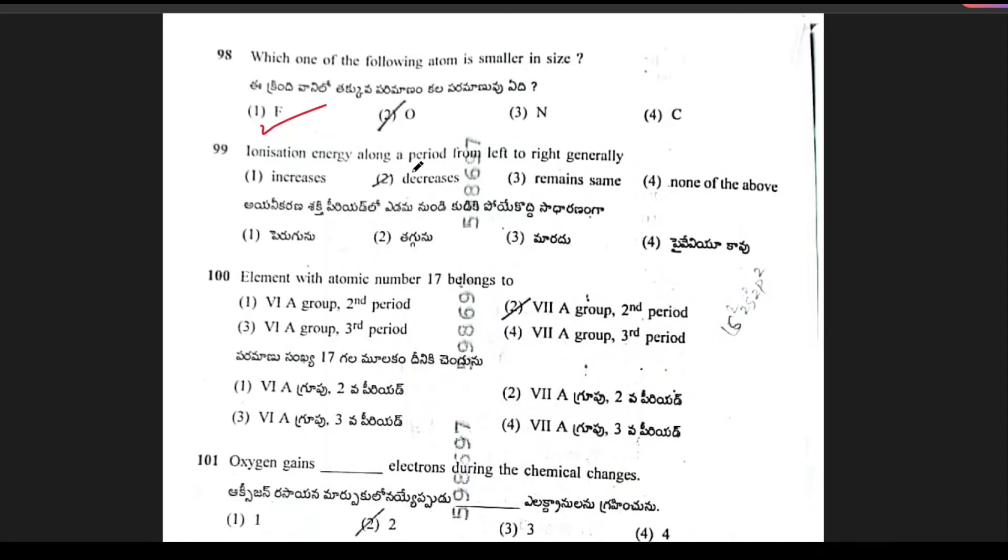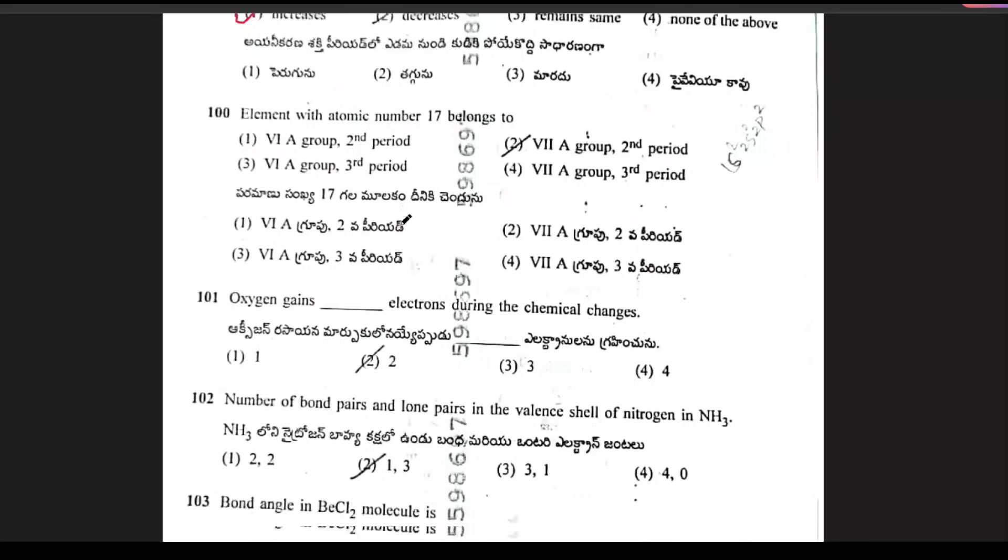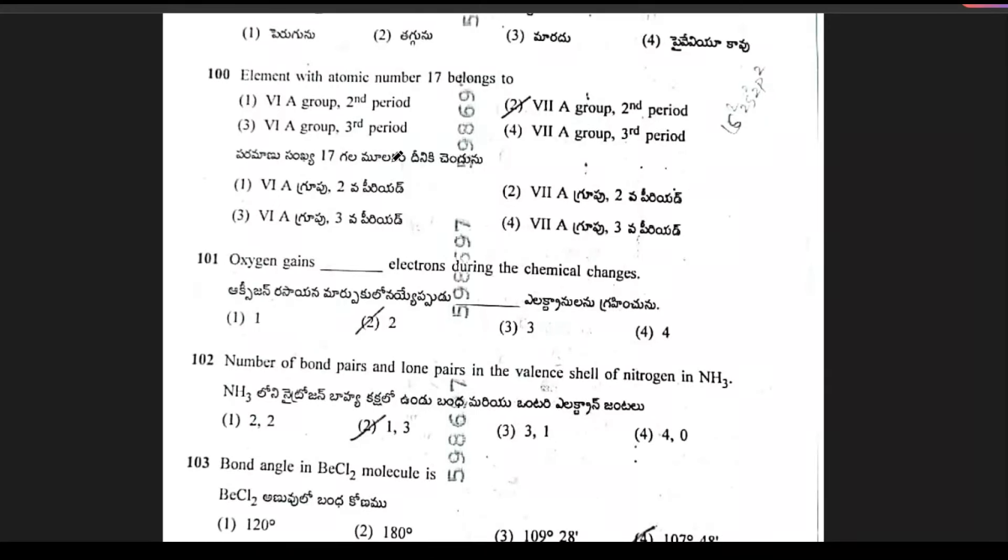Ionization energy along a period from left to right generally increases. Option 1 is the right answer. Next, element with atomic number 70 belongs to 3rd period, 7th group. Option 4 is the right answer.